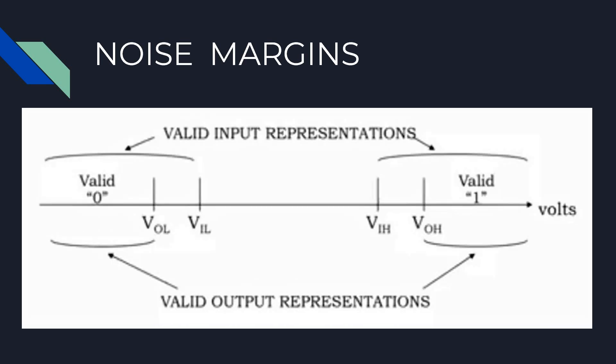Input voltage less than VIL is logic 0. Input voltage greater than VIH is logic 1. So in spite of noise in the circuit, the output is interpreted correctly due to noise margins.